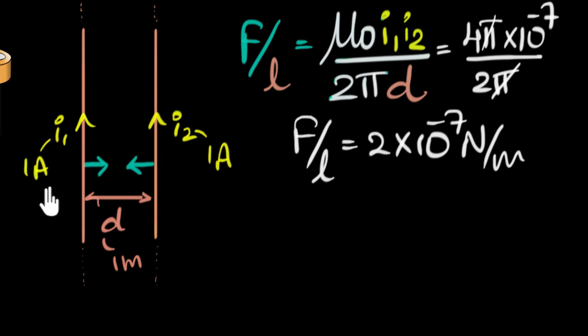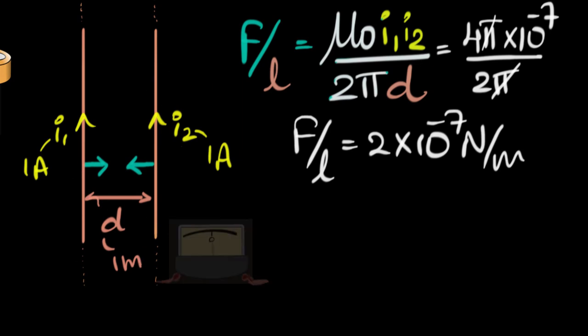And now ampere says, aha, I can now define an ampere. Okay, so I asked Mr. Ampere how? He says, look, take two long straight conducting wires and keep them one meter apart in vacuum. And I ask, why vacuum? Well, it turns out because the value of mu naught is four pi times 10 to the power minus seven only when that's in vacuum. So keep them one meter in vacuum and start passing some current through it.